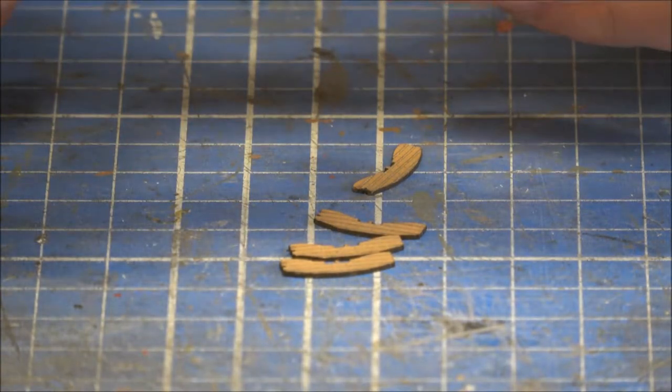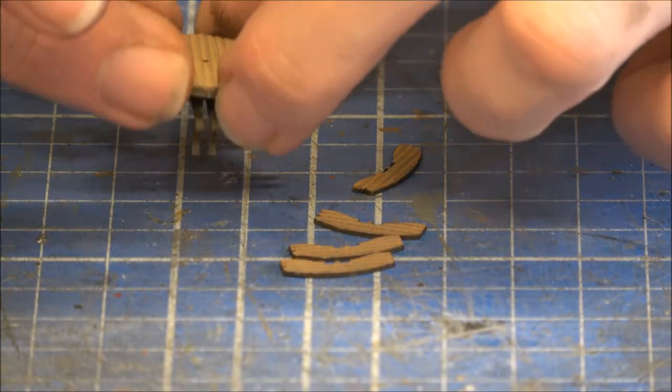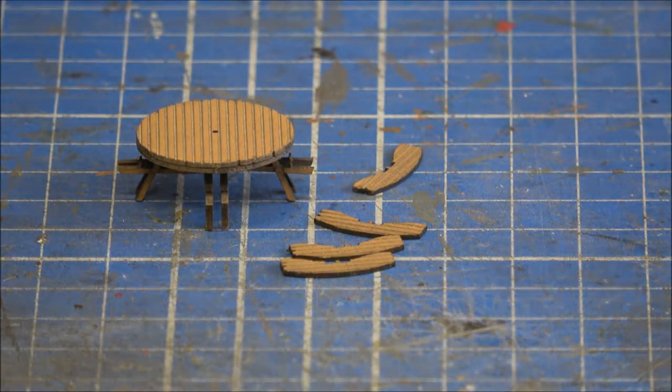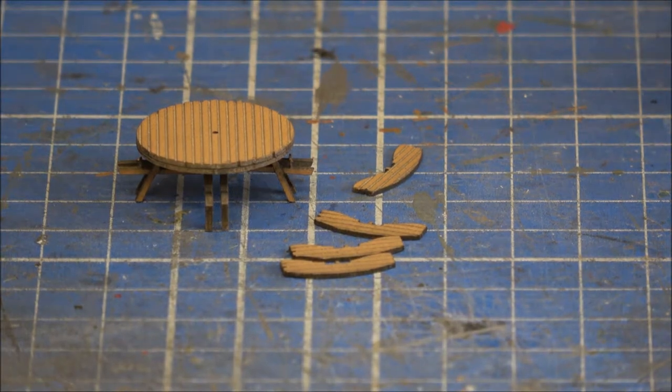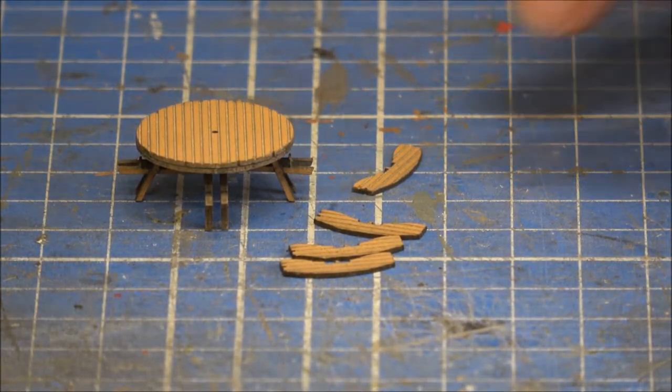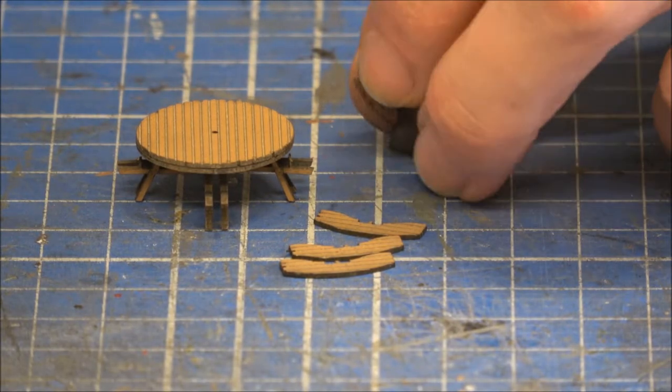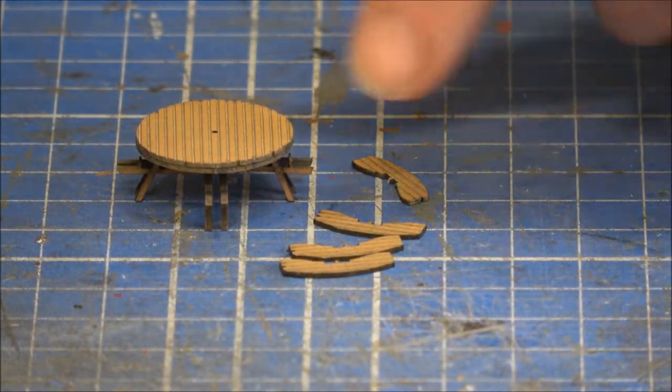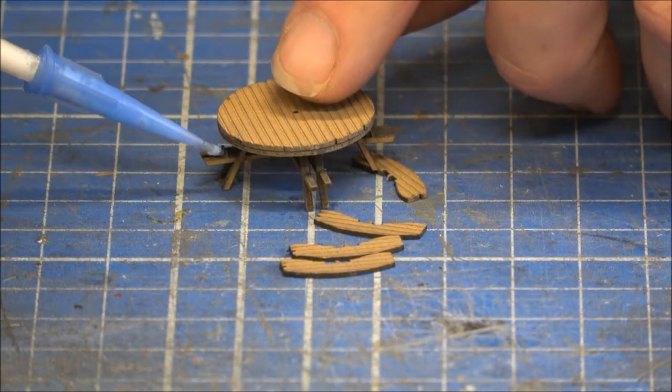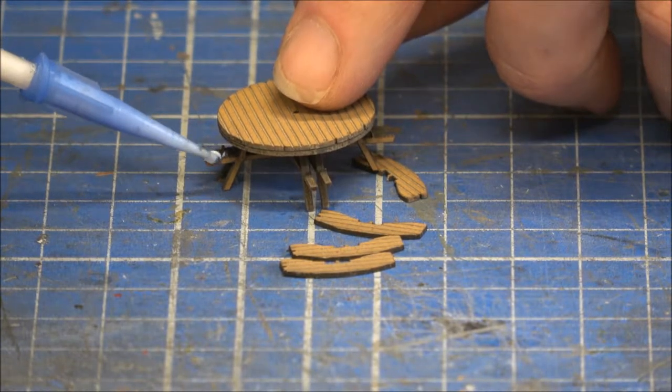So the long legs should be dry now. So just pick those up. And as you can see, we should now have something that is looking quite like a little table. And again, with the seat bases, it is a case of just put a little bit of glue on the tops of the legs.